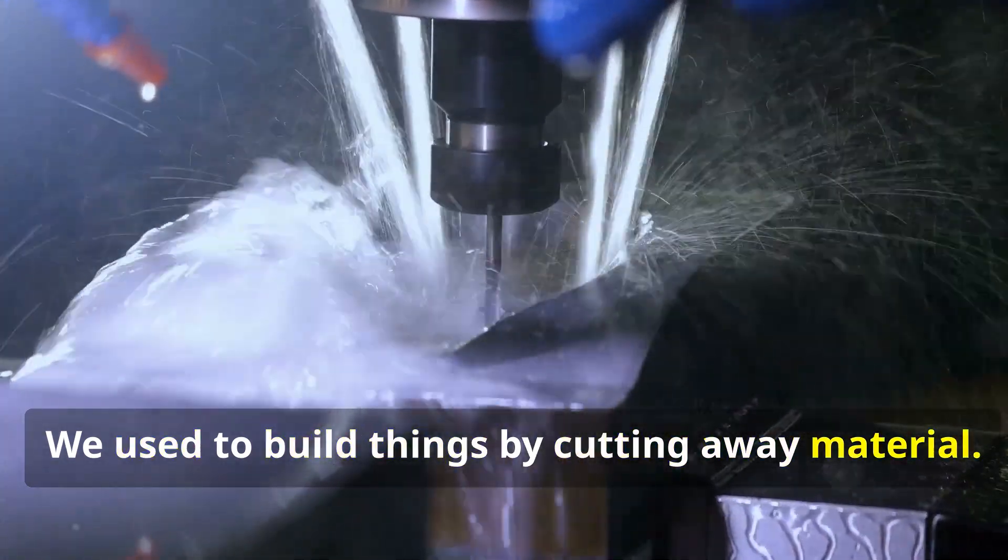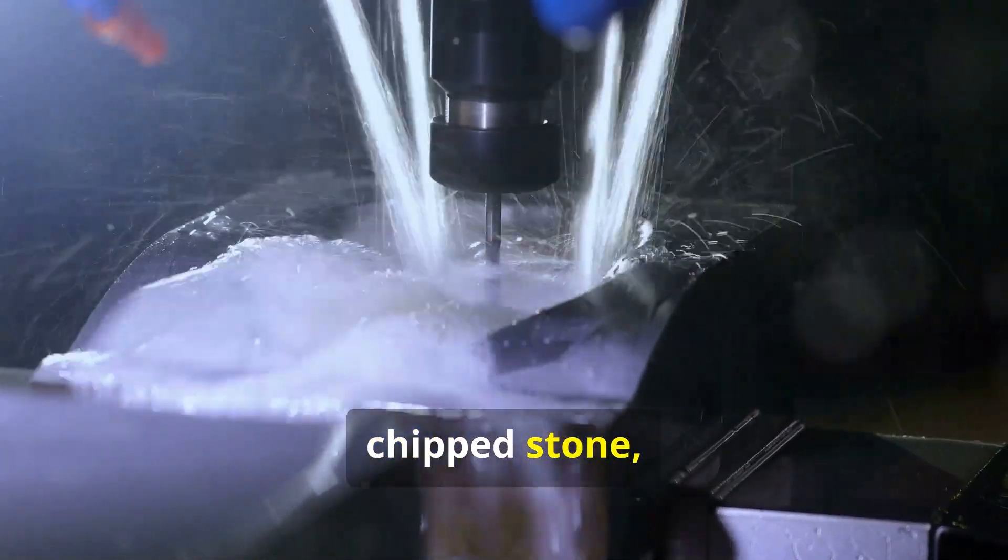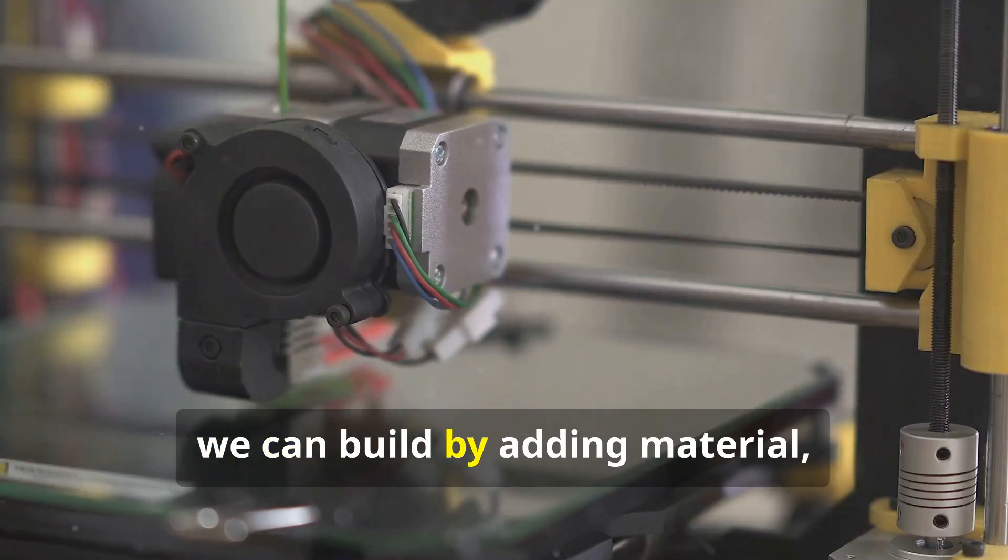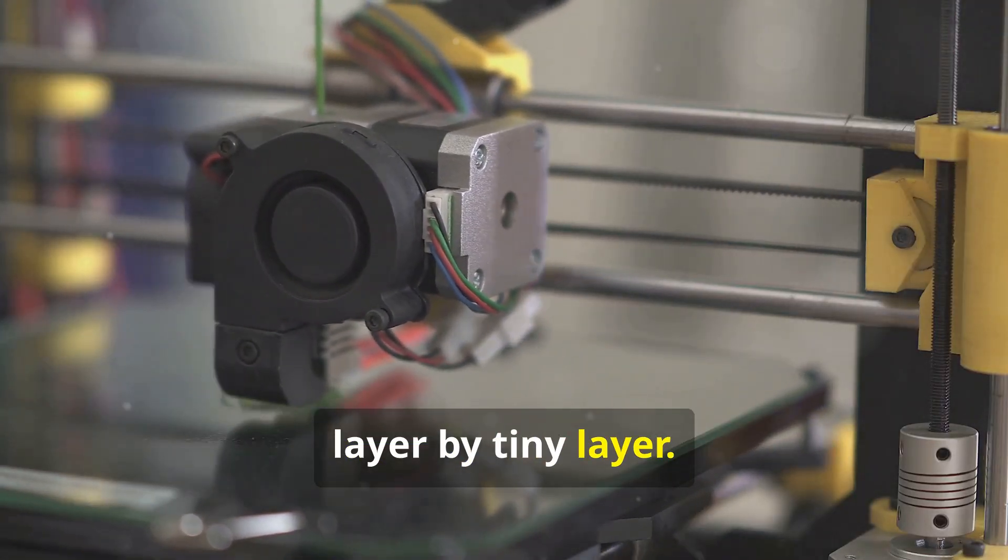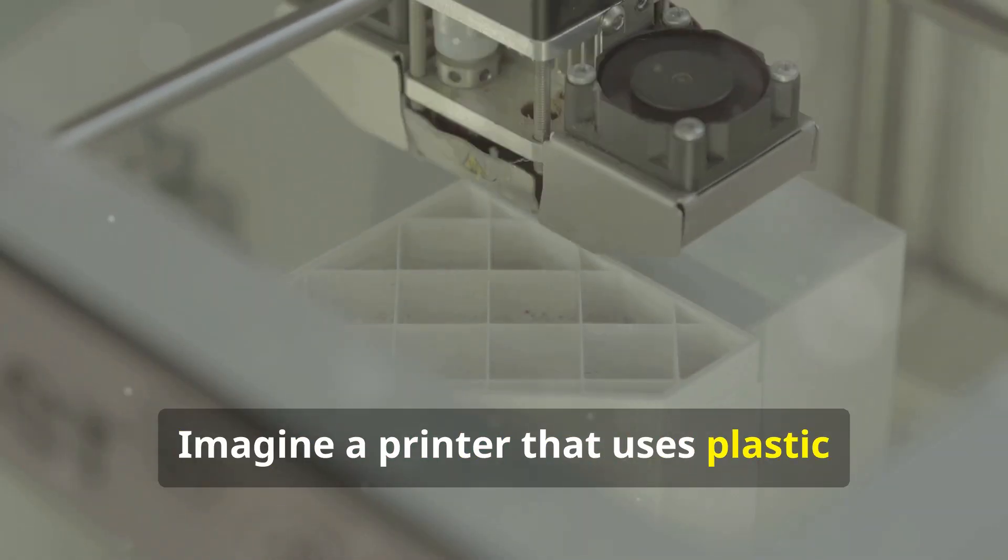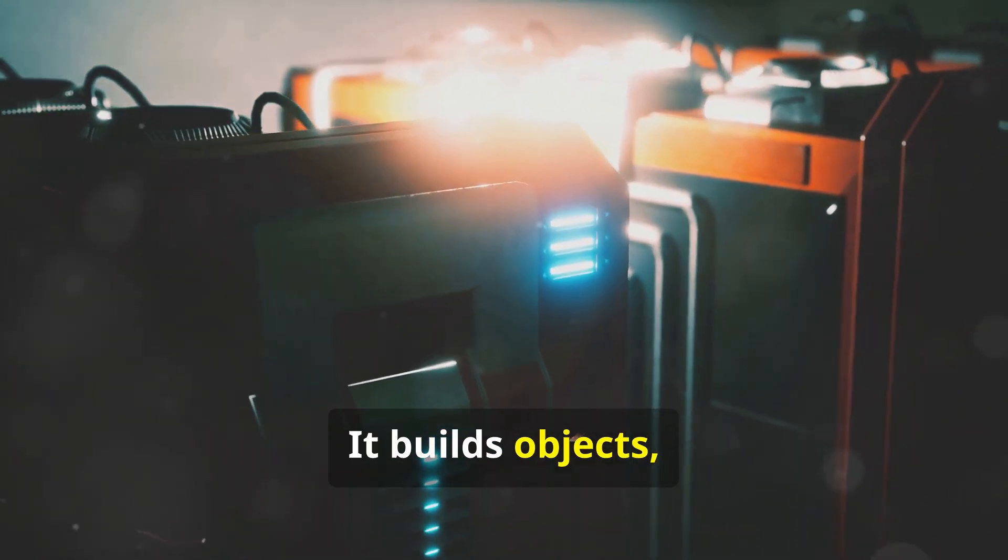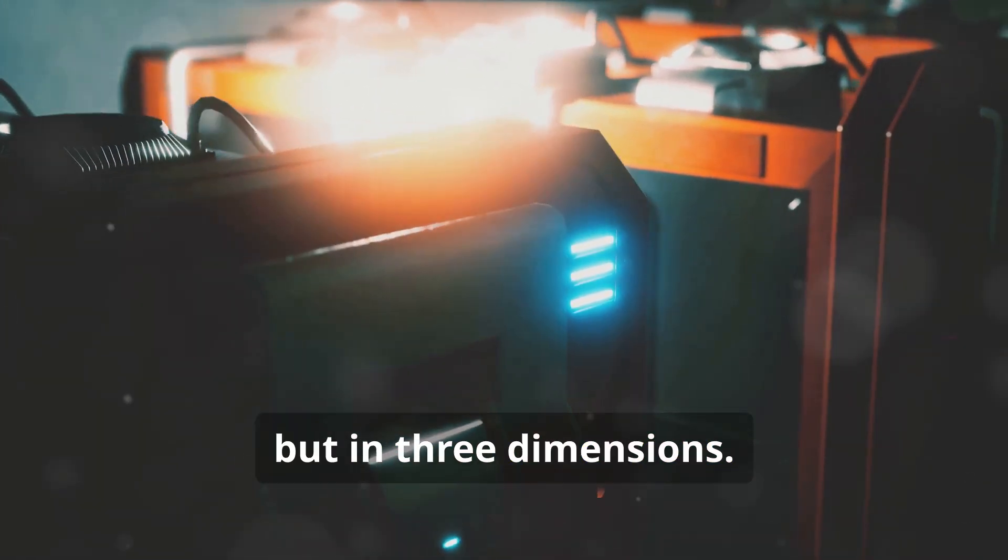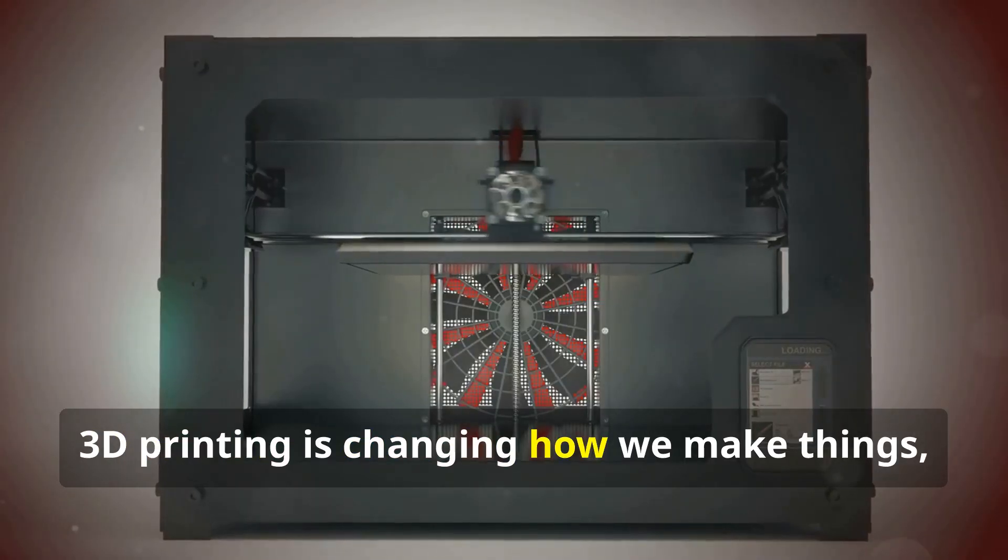We used to build things by cutting away material - we carved wood, chipped stone, and milled metal. Now we can build by adding material layer by tiny layer. This is 3D printing. Imagine a printer that uses plastic instead of ink. It builds objects not on paper, but in three dimensions. Exciting, isn't it? 3D printing is changing how we make things, from toys to tools and even parts for airplanes.